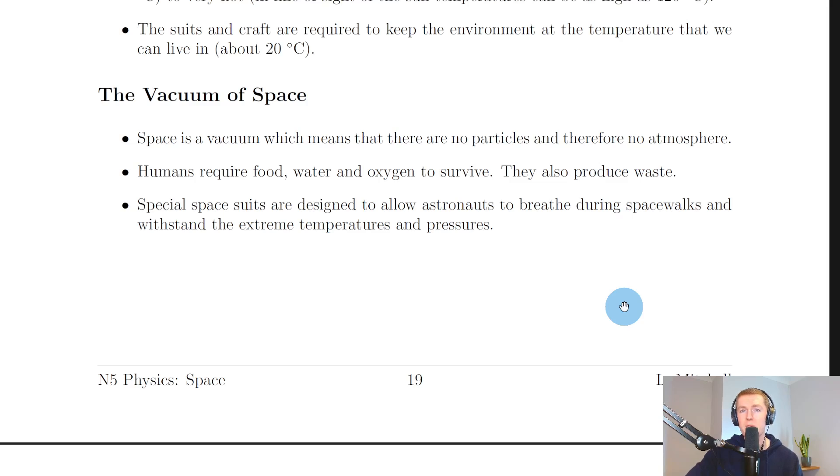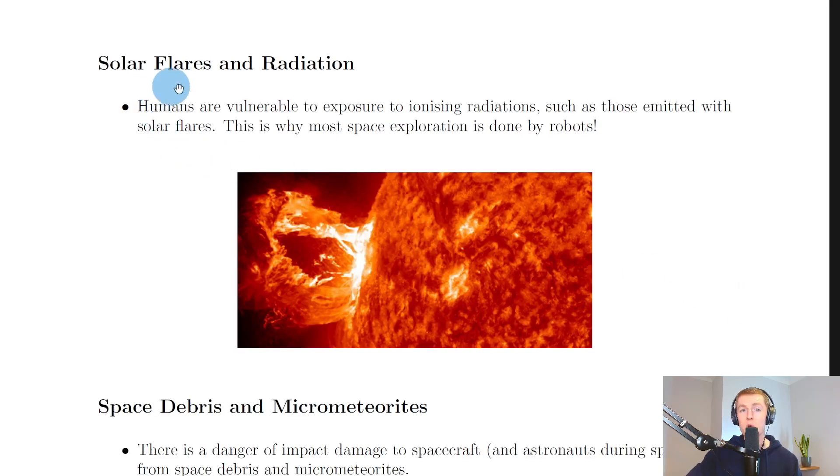Moving on, another risk would be solar flares and radiation. Humans are vulnerable to exposure to ionizing radiations, such as those emitted with solar flares. Remember, ionizing radiations are things like alpha particles, beta particles, and gamma rays that you learned about in the radiation topic. You can see the picture here shows you solar flares. This is why most space exploration is done by robots.